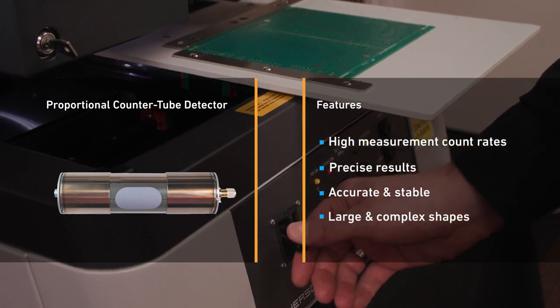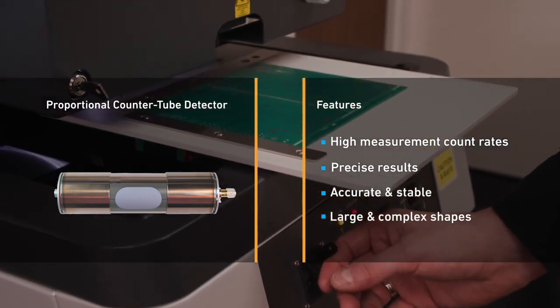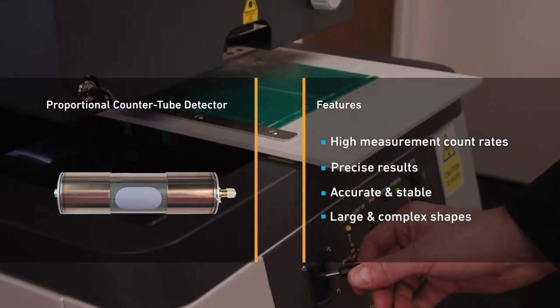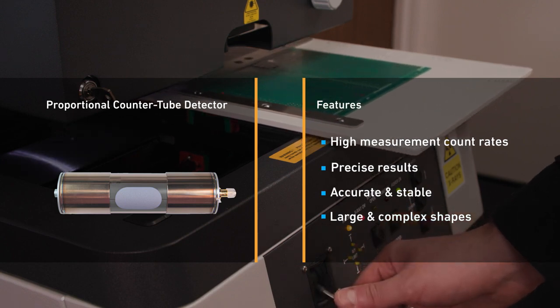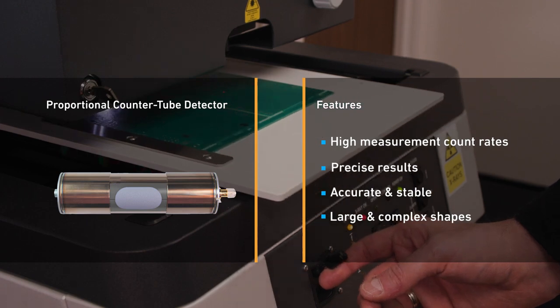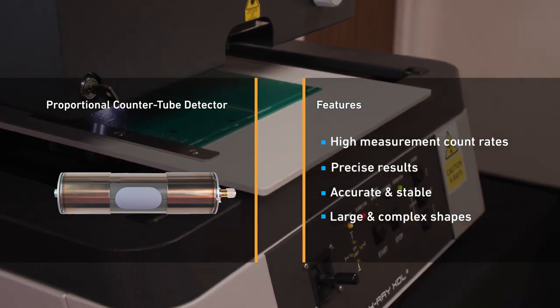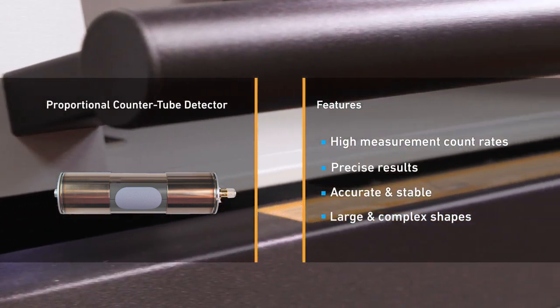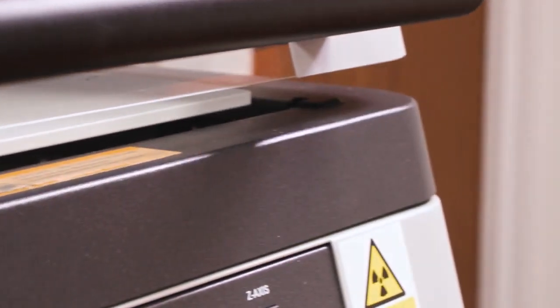The XDL instrument range benefits from a proportional countertube detector, with a large X-ray capture area producing high X-ray spectrum count rates and excellent precision, even at long measuring distances. This type of detector can be distant from the measured surface to accommodate large or complex shapes, which is a significant advantage over silicon-based detectors that must be close to the measured sample to be effective.